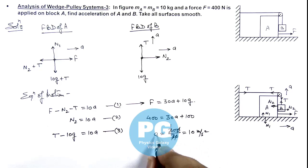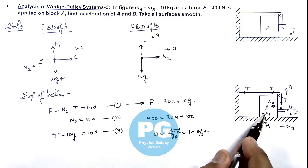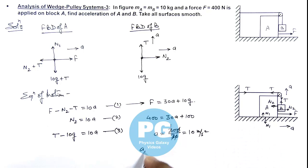So if a is the acceleration of block A, we can directly write acceleration of block A is 10 meter per second square.